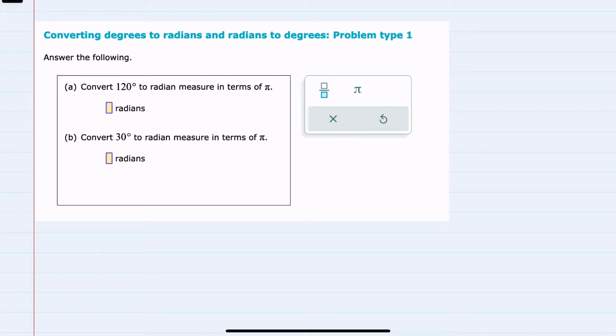In this video, I'll be helping you with the Alex problem type called converting degrees to radians and radians to degrees, problem type 1.